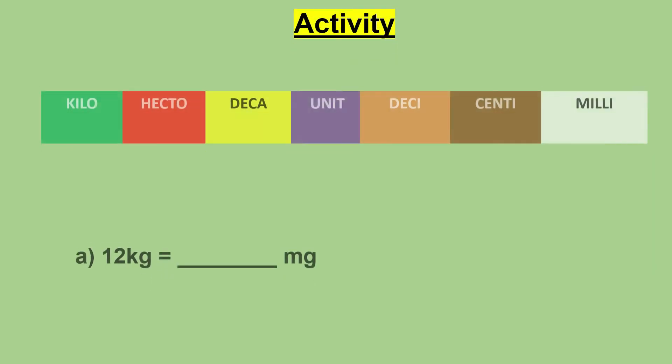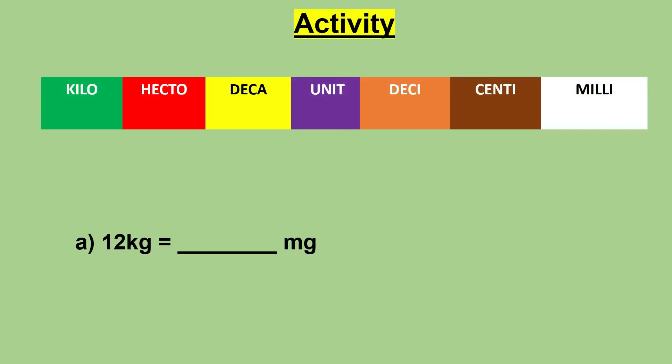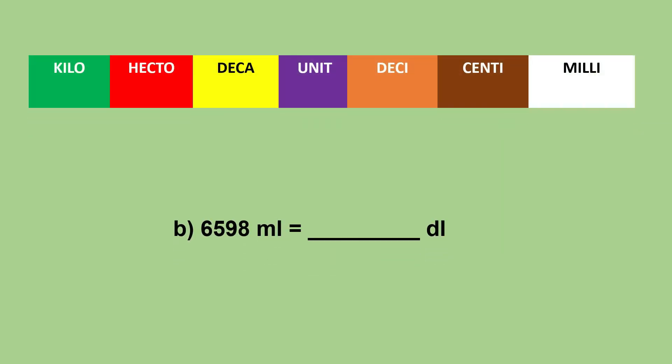Let's do some activities to convert these units. 12 kilograms to milligrams: Here we are moving from left to right six steps, starting from kilogram to milligram, so we have to multiply 12 by 10 lakh, and we get 1 crore 20 lakh milligrams. If we have to convert milligrams to kilograms, we need to divide by 10 lakh.